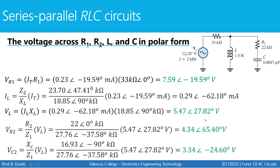If you're wondering why the voltages for R2 and C2 — 4.34 and 3.34 — don't simply add up to 5.47 (the inductor voltage), remember that's not how we add polar quantities. To verify, convert both to rectangular, add them together, then convert back to polar, and you'll get an answer very close to 5.47 at an angle of 27.82 degrees.